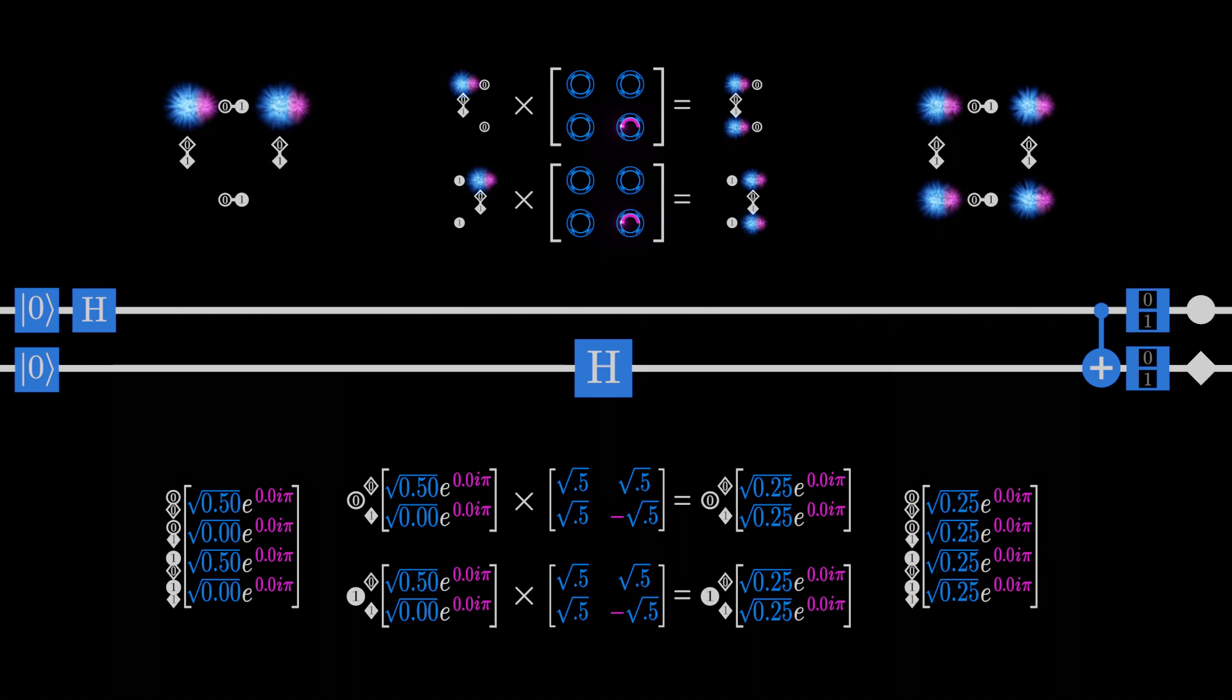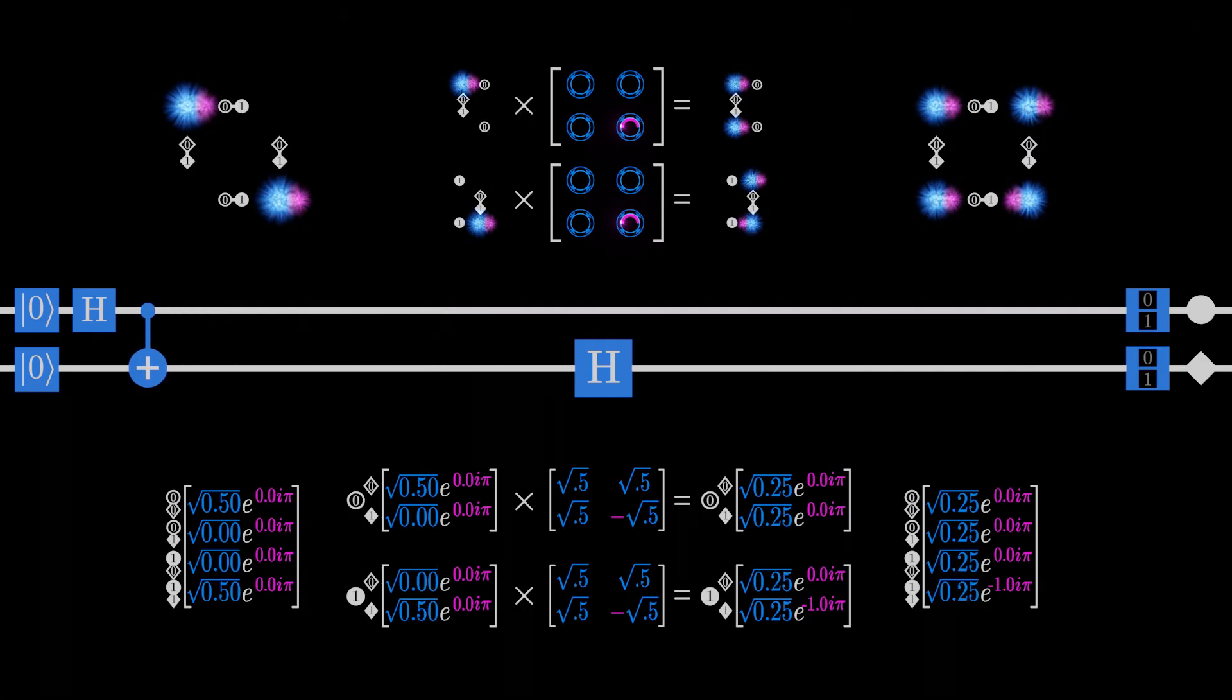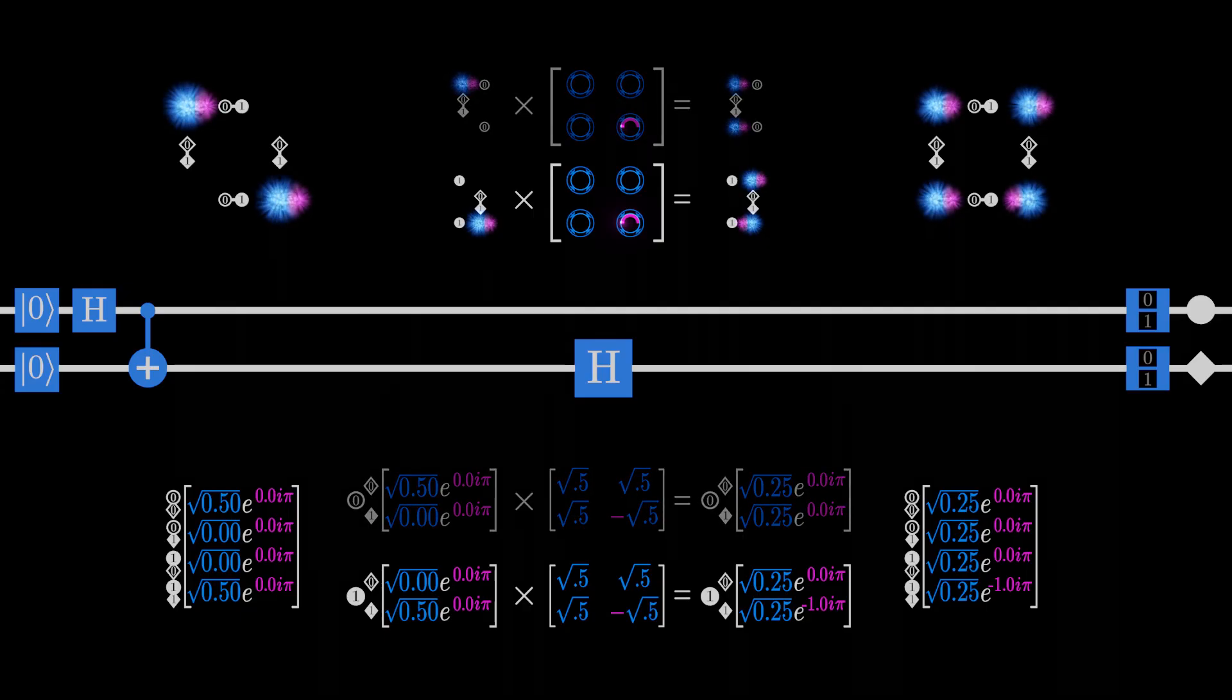If we move the H gate after the controlled knot, we again get a state where all outcomes are equally likely. But since the controlled knot has moved a probability to the 1 state, we end up with this extra phase rotation. Remember that the H gate turns a qubit always measured as 1 to a qubit where both outcomes are equally likely but the phases are opposite. This exact case is playing out in the grouping where the first qubit is 1.